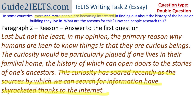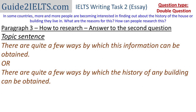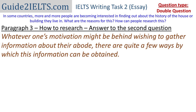We start the next paragraph, which covers the methods by which one can research the history of a house. We need a topic sentence that clearly states what the paragraph will hold. Instead of a plain topic sentence, I'm connecting it to the reasons: 'Whatever one's motivation might be behind wishing to gather information about their abode, there are quite a few ways by which this information can be obtained.' 'Abode' is a formal, literary term for house. I can then start with 'firstly' and give the first method.